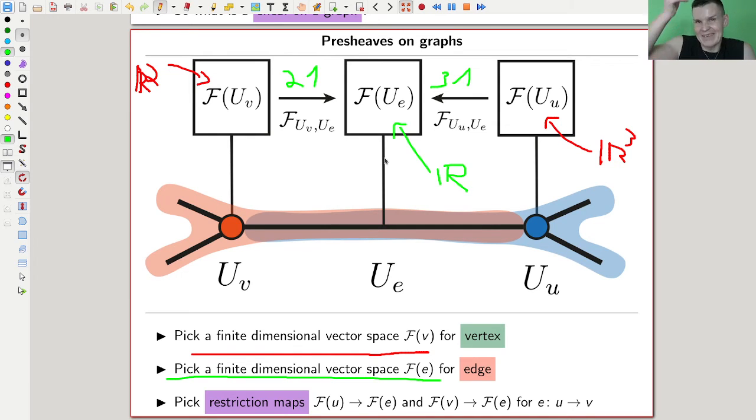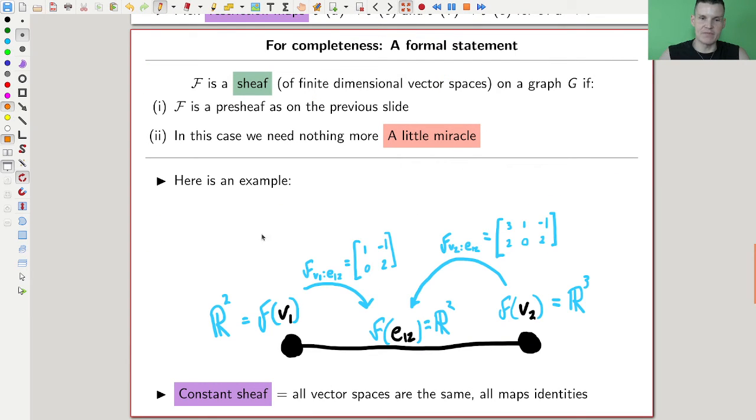And I hope this makes some sense and makes a sheaf a little bit less mysterious. It's really just attach something to a vertex, attach something to an edge. And edge connects vertices, so maybe you want to attach a map between those spaces. It can be really explicit here in this beautiful picture, just all again. So you get a vector space for everything, and you get a map, which is really just a matrix for the middle points.